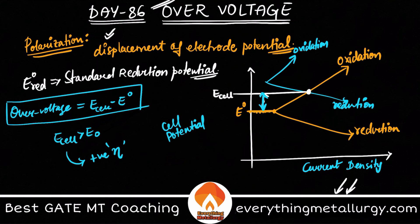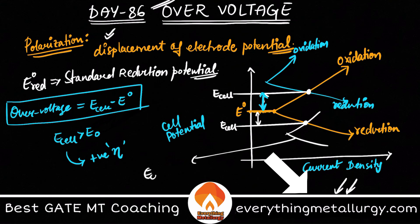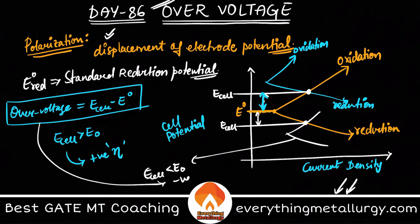Similarly, consider another curve coupled with some other electrode where E_cell is less than E_naught. In that case, the overvoltage will be negative. There was a Gate 2011 question where they gave a shift in equilibrium potential going to a higher value and asked what the overvoltage is. The answer is positive overvoltage, since E_cell is increasing.